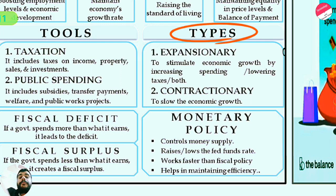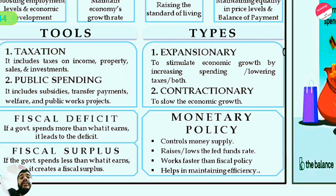There are two types of fiscal policy: expansionary and contractionary. Expansionary fiscal policy increases national income and GDP — it expands the economy. Contractionary fiscal policy slows economic growth — it contracts the economy.